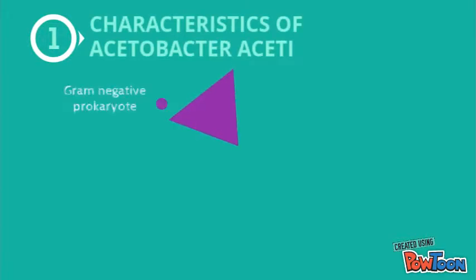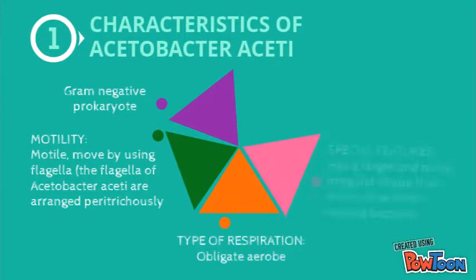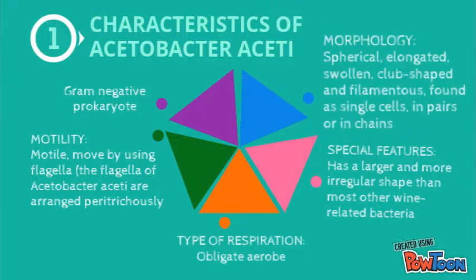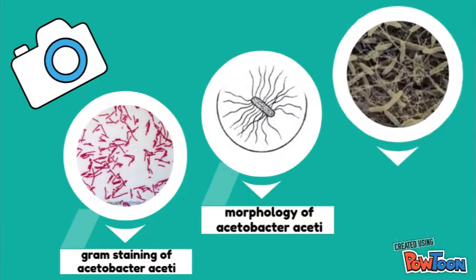Acetobacter aceti is gram-negative in color. It is motile and moves by using flagella. It has a larger and more irregular shape than most other related bacteria. Its morphology includes spherical, elongated, swollen, club-shaped, and filamentous forms, found as single cells, in pairs, or in chains.